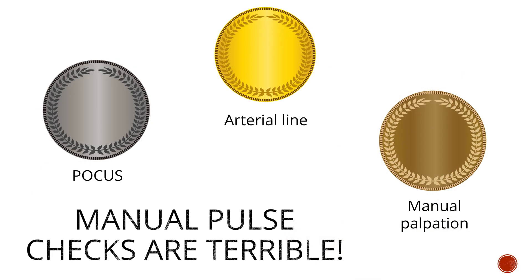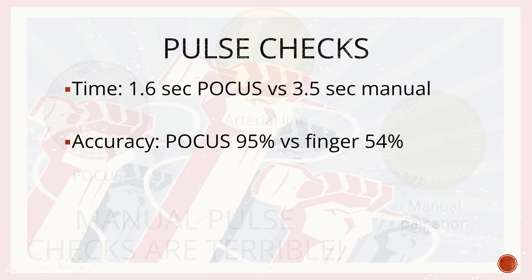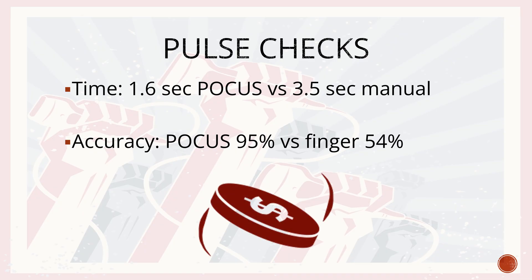Why should we use ultrasound for pulse checks? There are many studies showing that manual pulse checks are terrible. Arterial lines are great, however most patients don't have them in the emergency department, so that leaves POCUS as the main and most accurate way to look for a pulse. In two separate studies, POCUS pulse checks were shown to be faster and more accurate — POCUS took less than half the amount of time as a manual pulse check, and 54% accuracy for manual pulse checks is almost a coin flip.